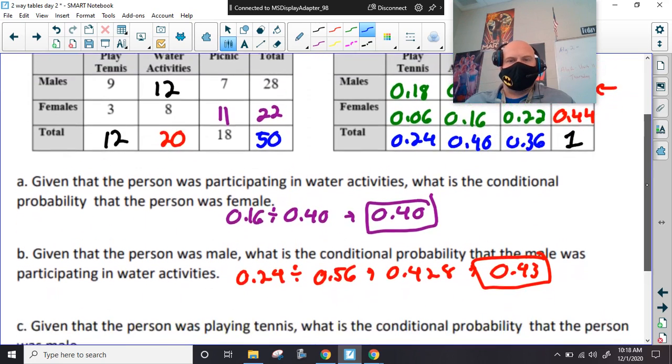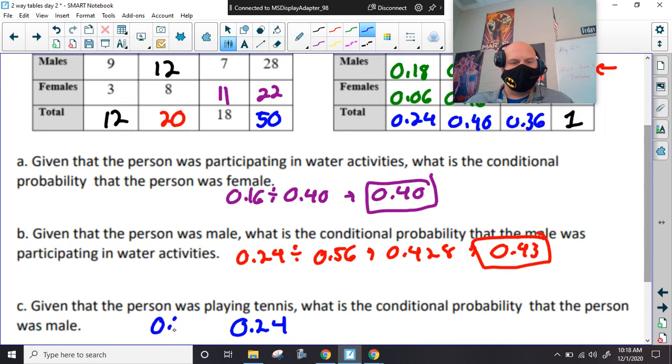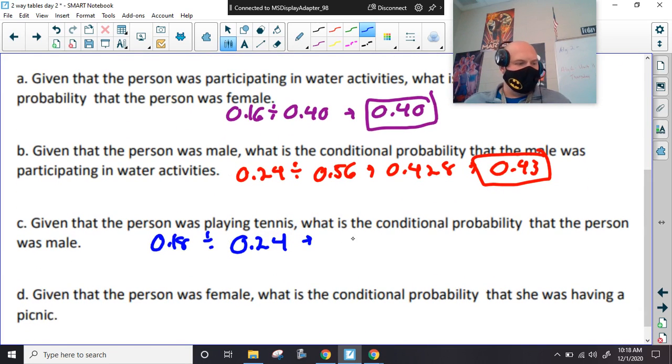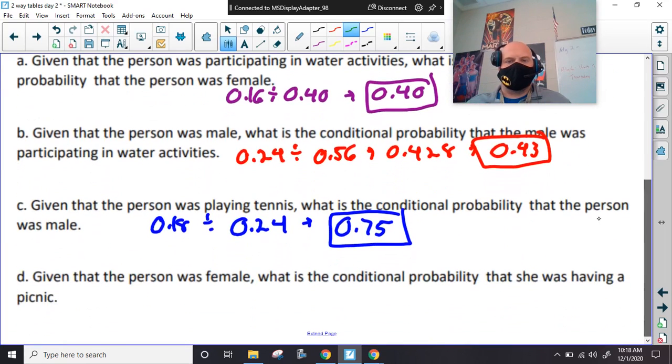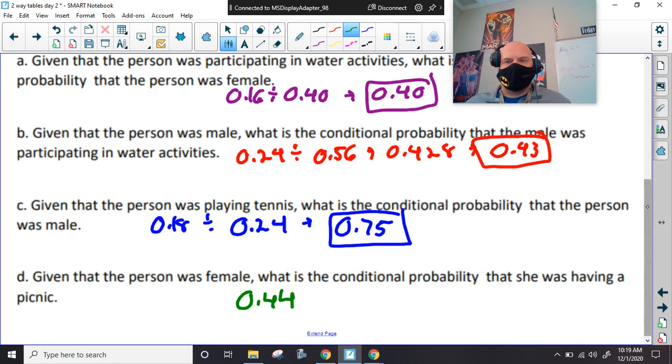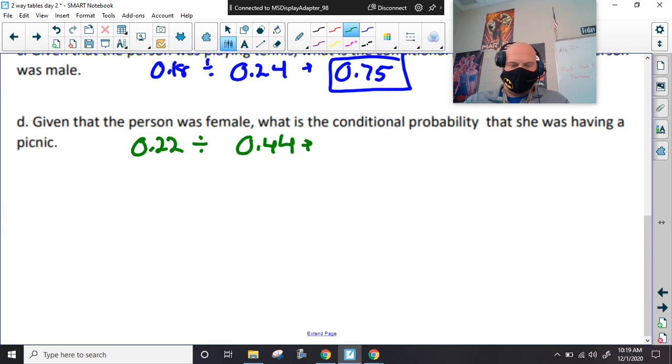Given that somebody was playing tennis, so that's 0.24. Possibility that they were male, 0.18. So, 0.18 divided by 0.24. This is 0.75, or that would be 75%. And, given that a person was female, so our total of females is 0.44, and what's probability that they're having a picnic, 0.22. So, 0.22 divided by 0.44, 0.5.